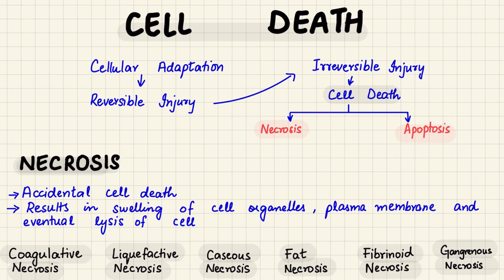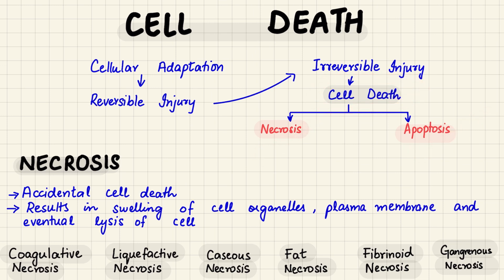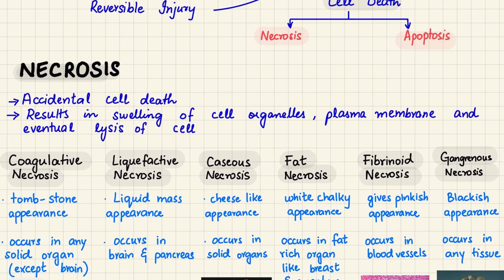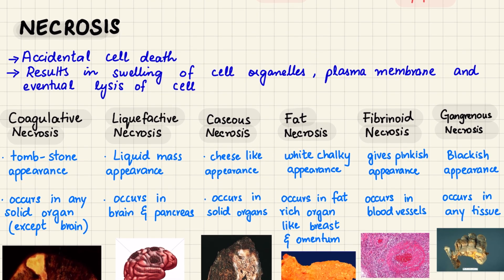Now let's look at cell death. First the cell tries to adapt, then it goes into reversible injury, then irreversible injury, and finally into cell death — which can occur through either necrosis or apoptosis.